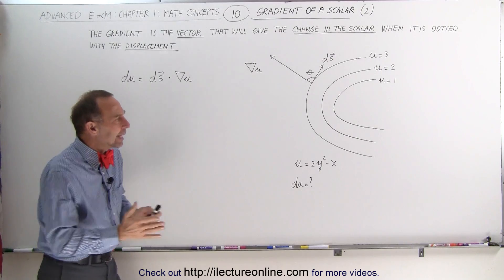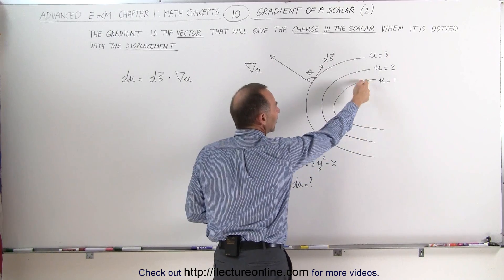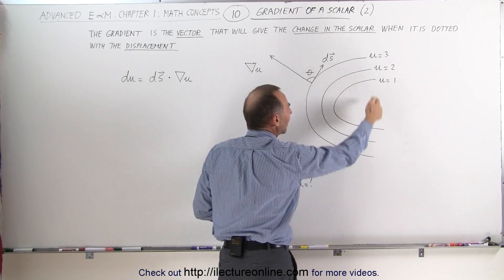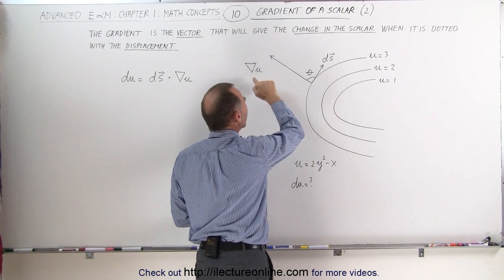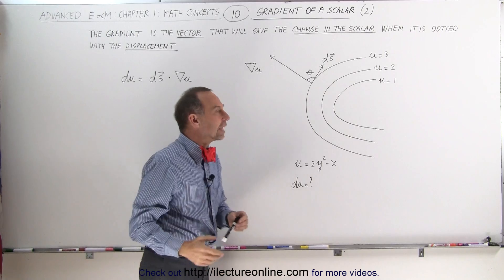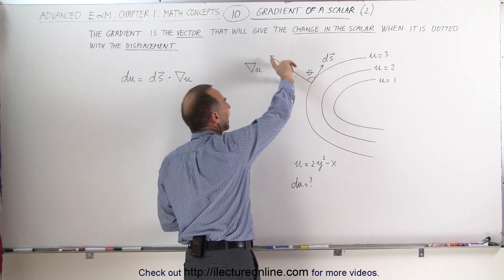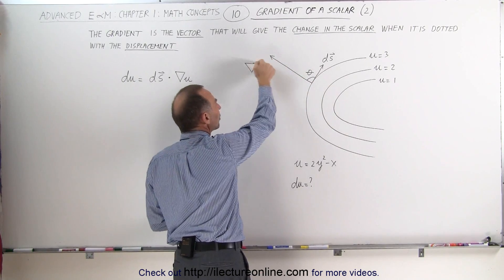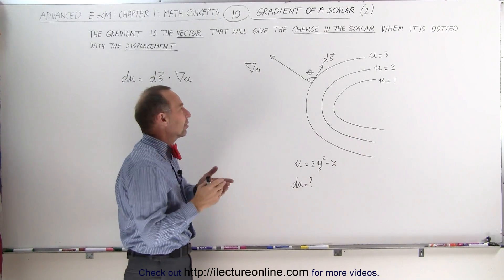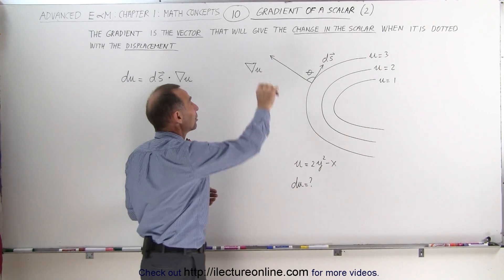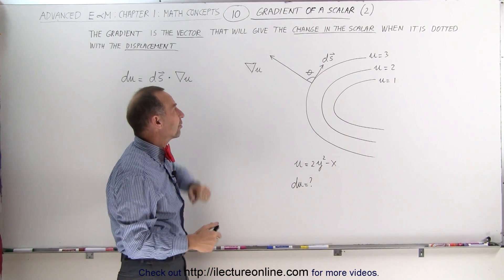What does that really mean? Let's say we have a scalar field right here. It's a two-dimensional field. We have the lines representing constant values for the scalar field, and at this location right here we've drawn the gradient of that scalar field. Notice that this is a vector quantity — it has magnitude and it has direction. Now notice we don't have a little arrow on top of the gradient of u; it's understood to be a vector. Sometimes it's confusing — I like to put little arrows on top just to make sure that everybody knows this is a vector quantity. The gradient of a scalar is a vector.